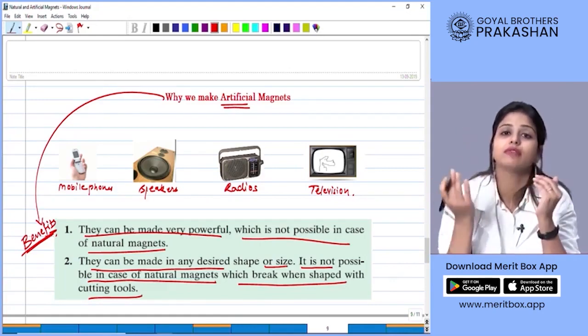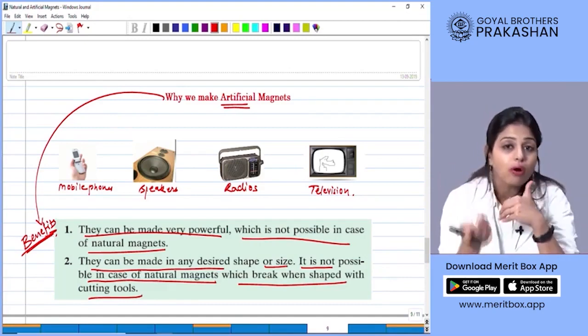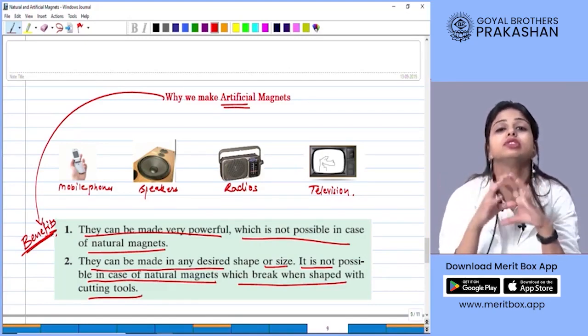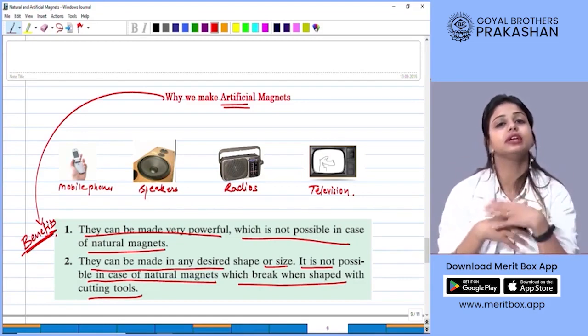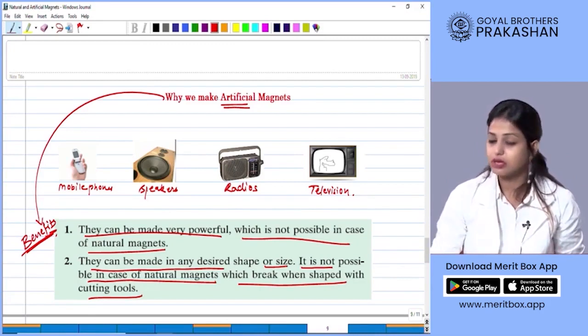But on the other hand, while making artificial magnets, it is on us how strong we want to make it plus in which shape we desire the magnet. So they find use and application in diverse technologies. Okay students?